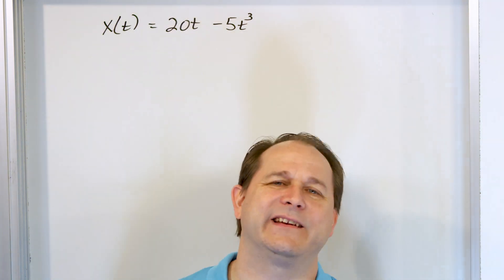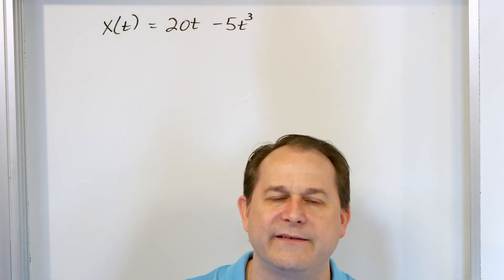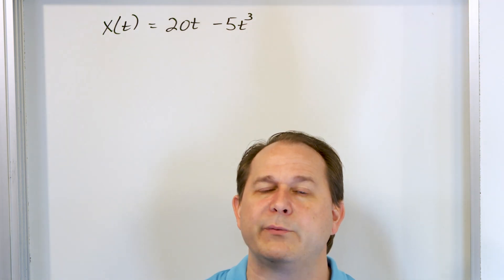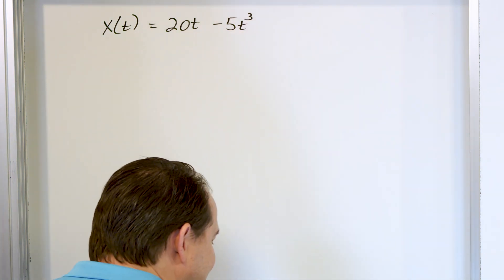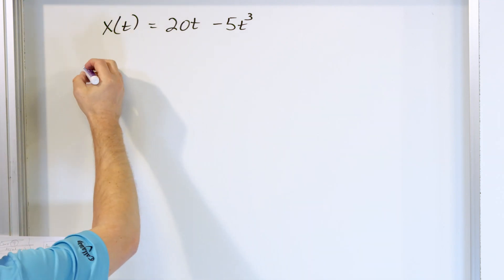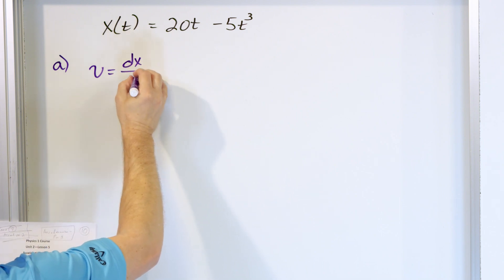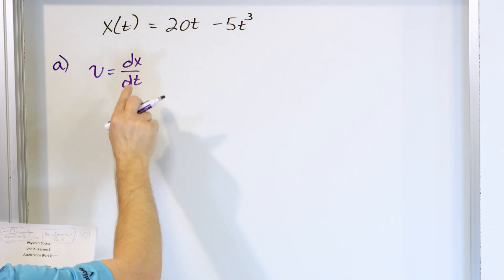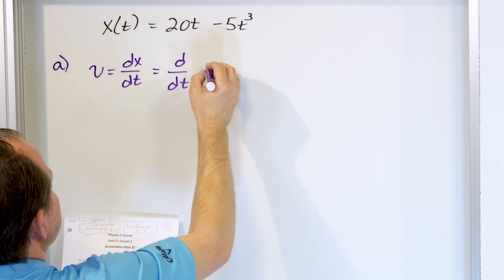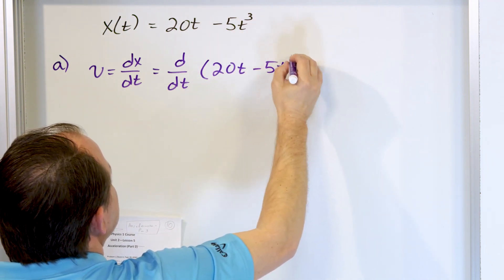The problem doesn't give us the velocity directly; it gives us the position. So the first thing we need to do is find the velocity function. We know that velocity equals the derivative of position, dx/dt. So we take the time derivative d/dt of (20t - 5t³).